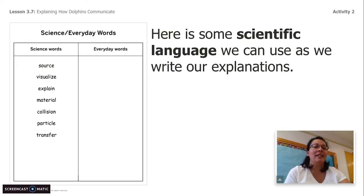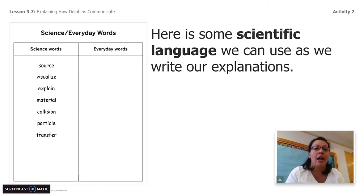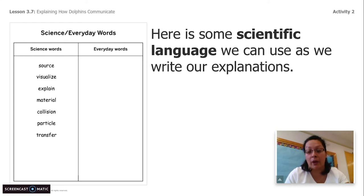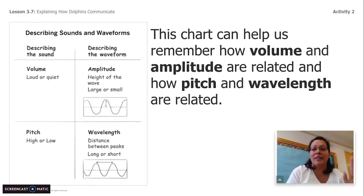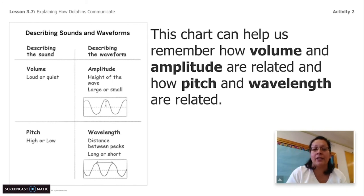Here's some scientific language we have been using throughout our unit: source, visualize, explain, material, collision, particle, and transfer. We can also refer to key concepts and vocabulary throughout the unit to help us use scientific language when we write back. This is a chart that can help you remember how volume and amplitude are related and how pitch and wavelength are related. On one side, it's describing the sound — the volume and the pitch. On the other side, it's describing the waveform. At this point in the video, you can stop and use this for your explanation as well.